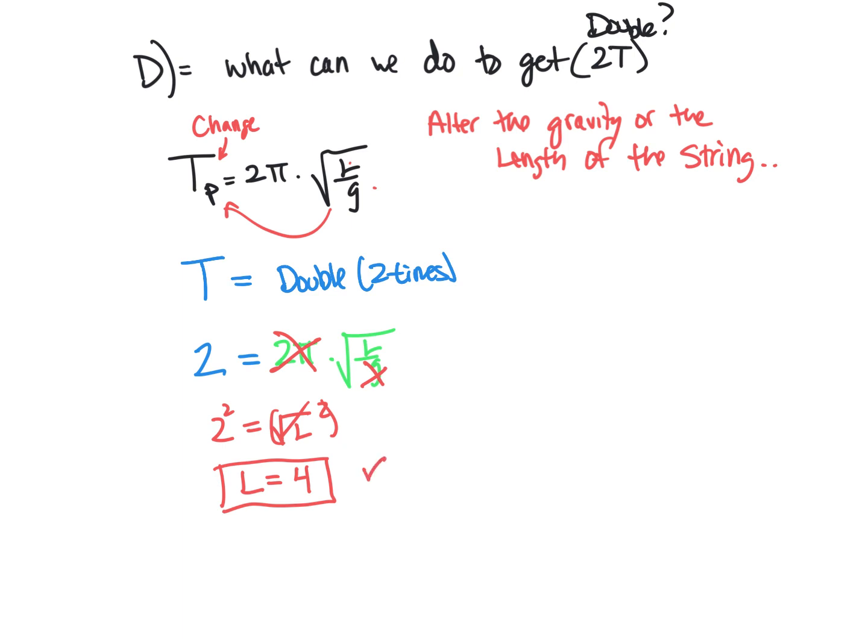You could also do a different route. Let's say you didn't want to change the length. Let's say you wanted to change the gravity. So let's rewrite this. So you get period equals 2 pi square root of L over G. So let's say you want to double the period now. So we're going to double that. Again, that's a constant. And now let's say we're going to keep the length constant. So now we have the square root of 1 over G.